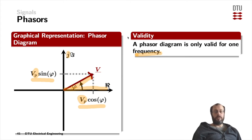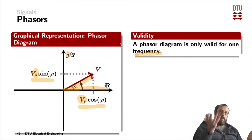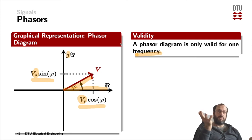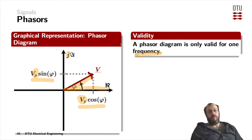This representation might initially seem more difficult. It is simplified in the sense that we are deliberately discarding some information — the frequency — to make it easier to handle multiple signals simultaneously. For instance, combining a voltage, a current, and an impedance such as a resistor, inductor, or capacitor becomes harder if we also have to carry the unnecessary frequency information along the way.